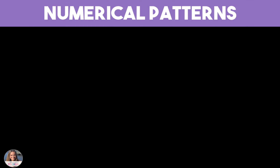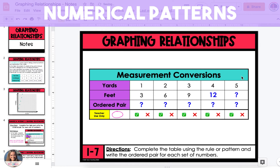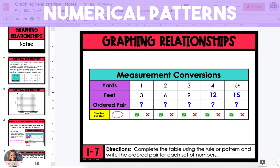In the final example, we're going to complete a table and then graph the data on a coordinate grid. The table shows measurement conversions from yards to feet. One yard equals three feet, two yards is six feet, and three yards is nine feet. Continuing the pattern, we multiply four yards by three to get 12, and five yards by three to get 15. From here, we're going to create ordered pairs using the data. The yards will be the x-coordinate, and the feet will be the y-coordinate.